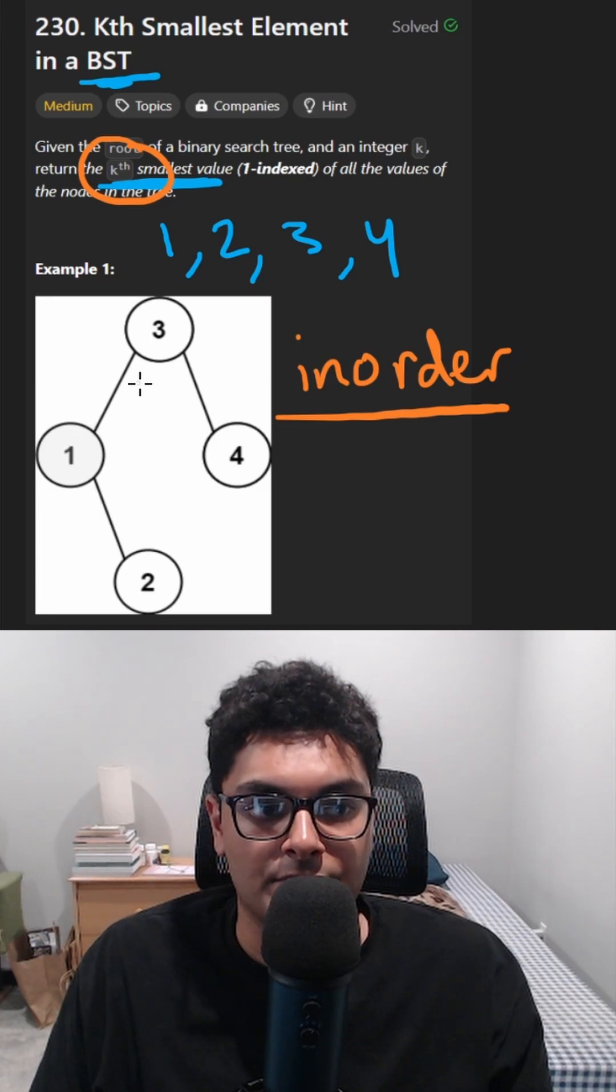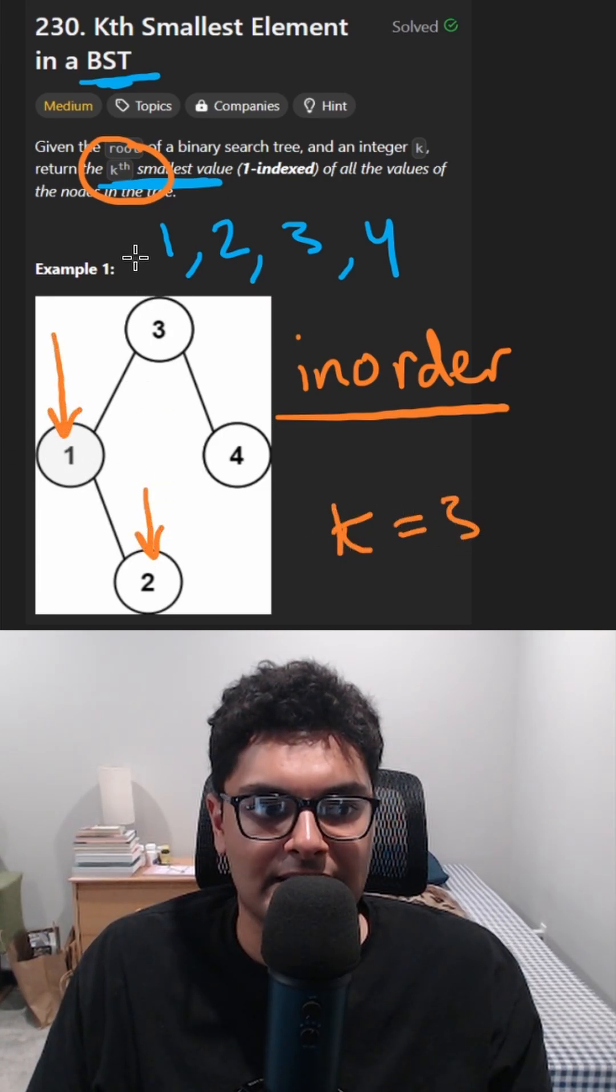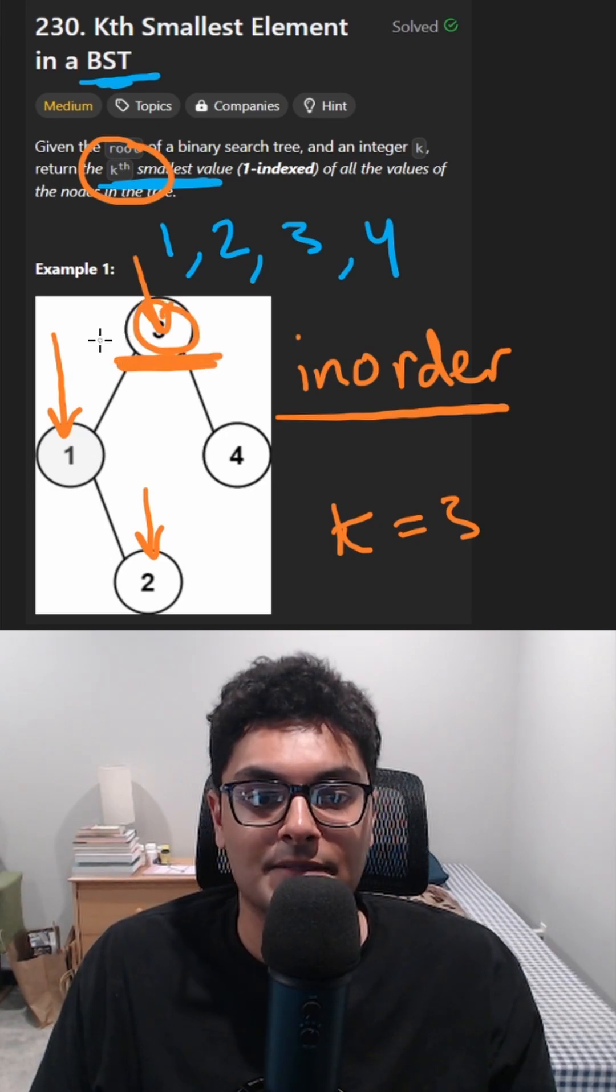And by the time we reach the k-th node, which if let's say k is equal to three, we'll visit this one first, this one second, and this one third. Coding it though is going to be a little bit tricky.